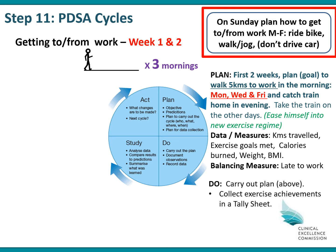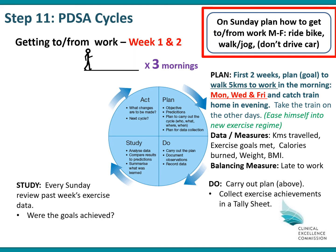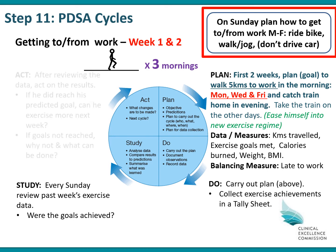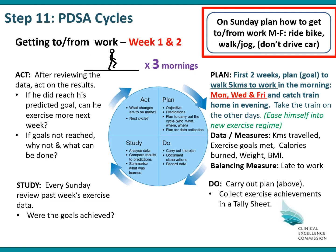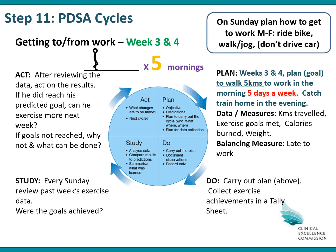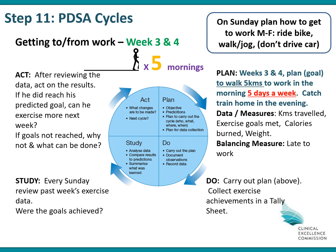The Do is where he carries out the plan and collects the information in a tally sheet. The Study is every Sunday he reviews the past week's exercises to see if his goals were achieved. And the Act is where he works out whether he can ramp things up the following week, stay the same, or wind things back because he's not achieving his goals. If all went well in weeks one and two, in weeks three and four he's going to ramp things up — walking to work five mornings a week, collecting the same data and balancing measures, reviewing on Sunday night to see how he went, and acting by deciding whether to ramp up the following weeks.